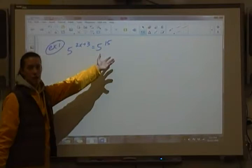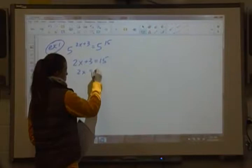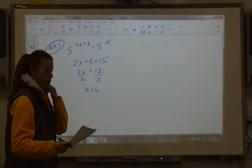Well, we can see that we have the same base, so we just have an equation to solve. 2x plus 3 equal to 15, subtract 3 over, 2x is equal to 12, divide by 2, so x is 6. Not too bad.